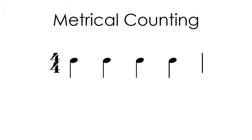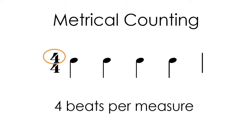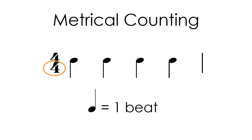This video explains the concept of metrical counting in 4-4 time. In 4-4 time, the upper number 4 indicates that there are 4 beats in each measure, and the lower number 4 indicates that the quarter note receives 1 beat or count.